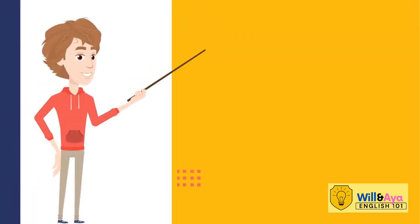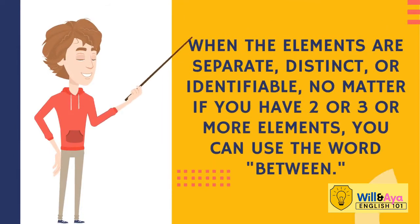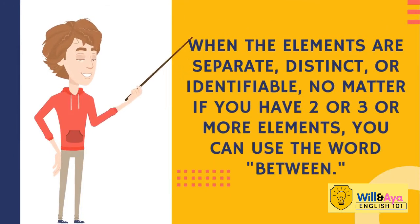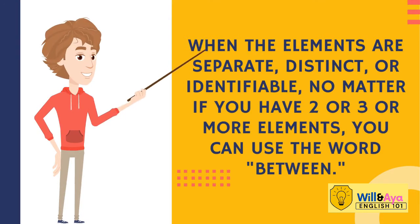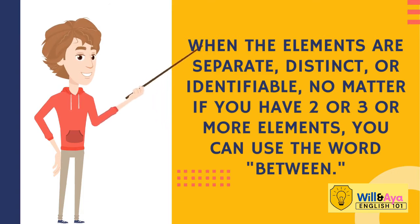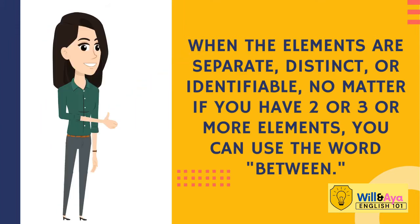So take note of that. When the elements are separate, distinct, or even identifiable, no matter if you have two, three, or even more elements, you can use the word 'between.' That's right — 'between' is not only used when there are two elements.